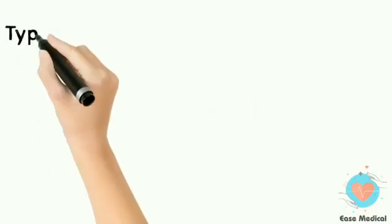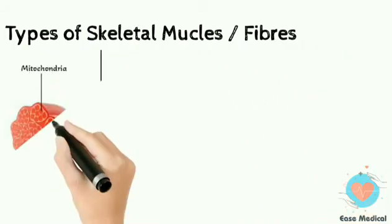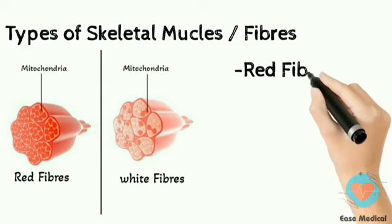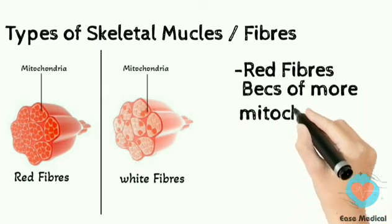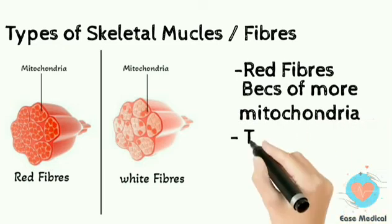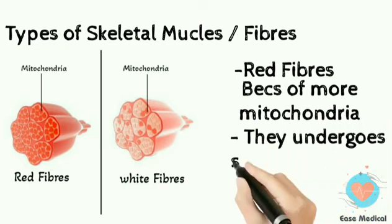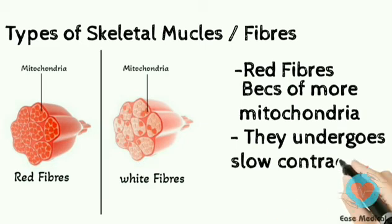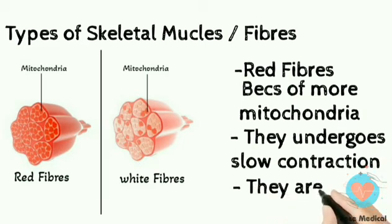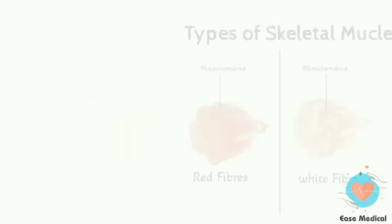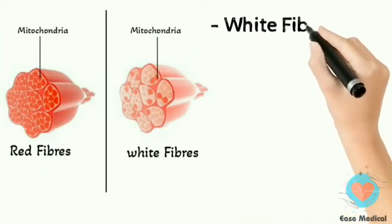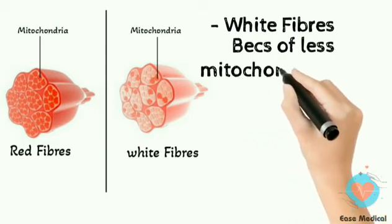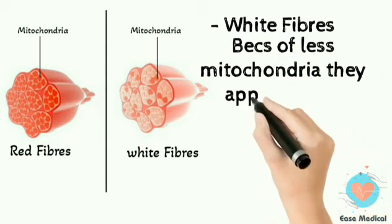The types of skeletal muscle fibers are red fibers and white fibers. Red fibers, because of their higher mitochondria content, appear red; they undergo slow contraction and are less easily fatigued. White fibers, because of less mitochondria, appear white; they undergo fast contraction and are easily fatigued.